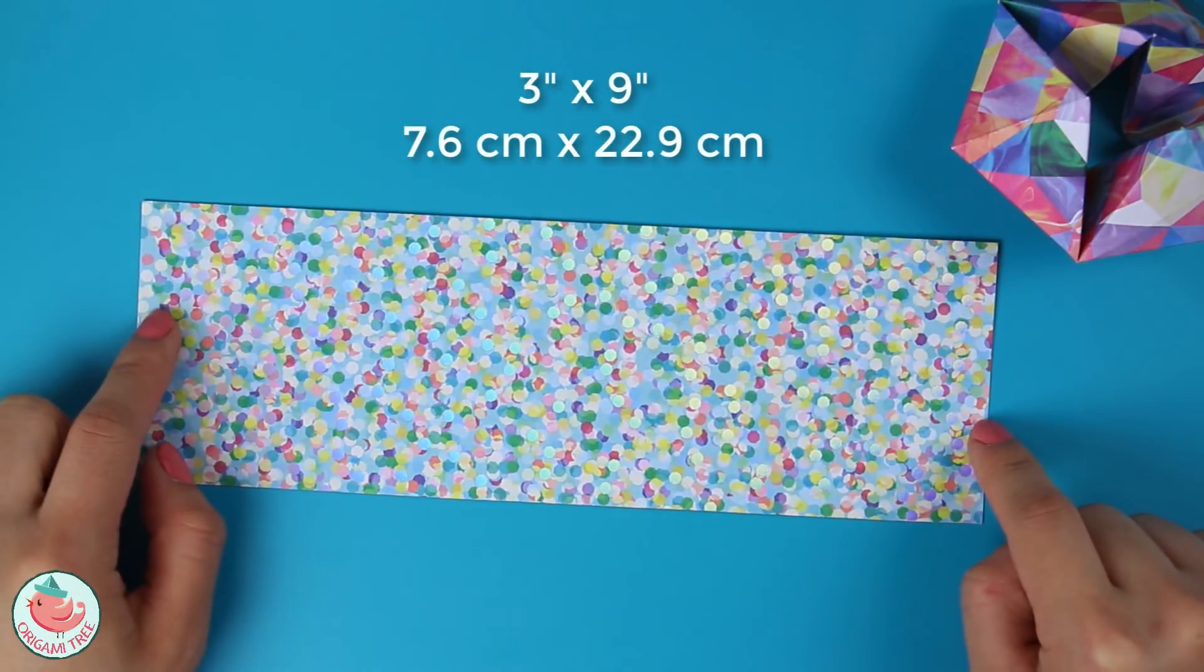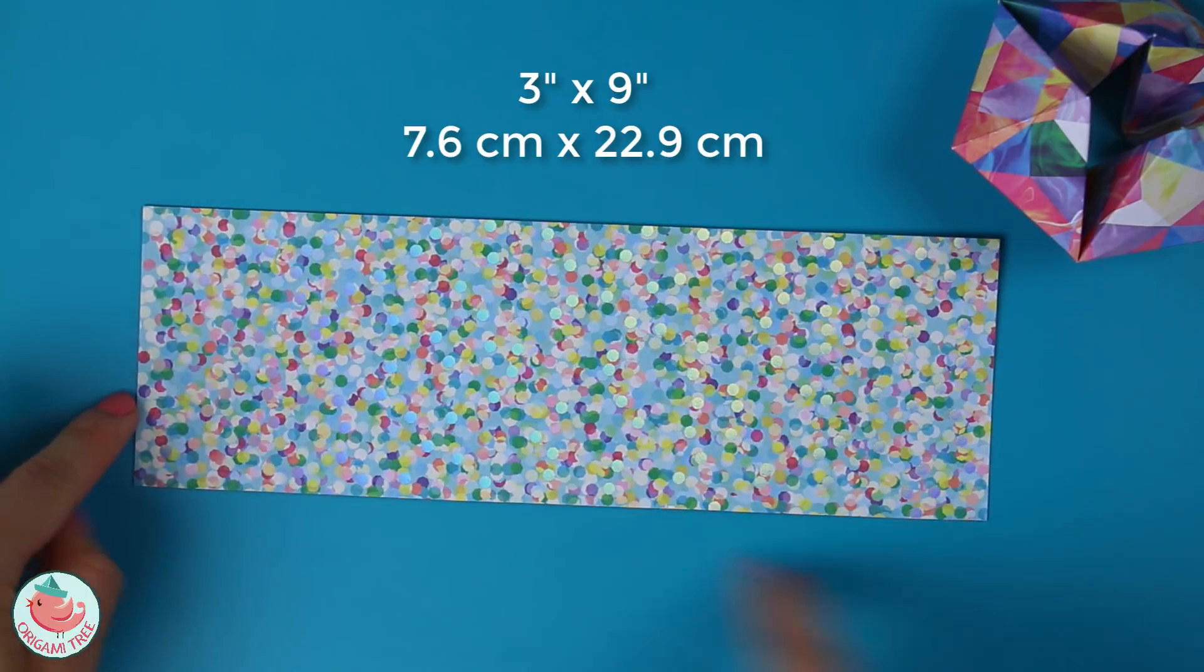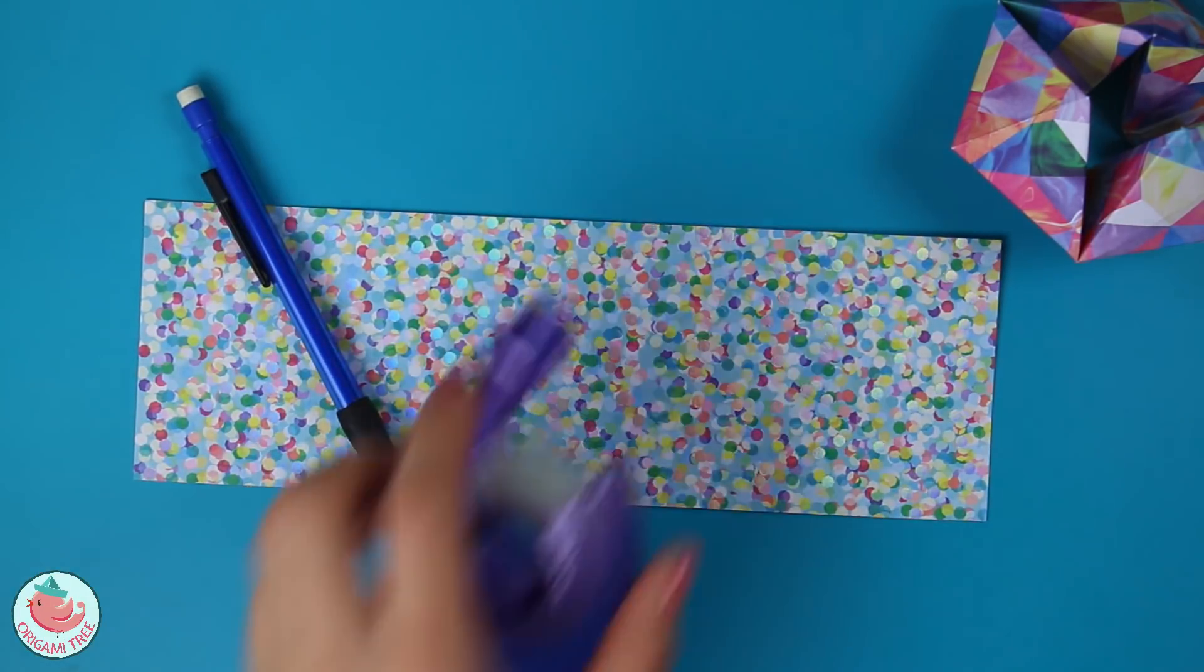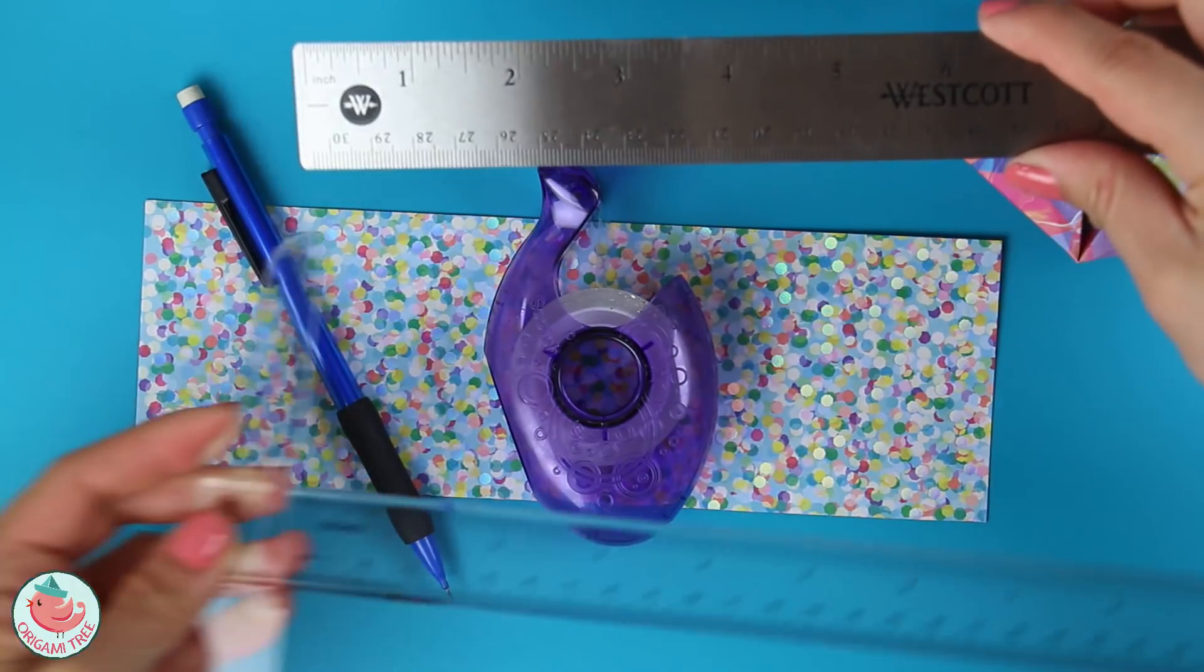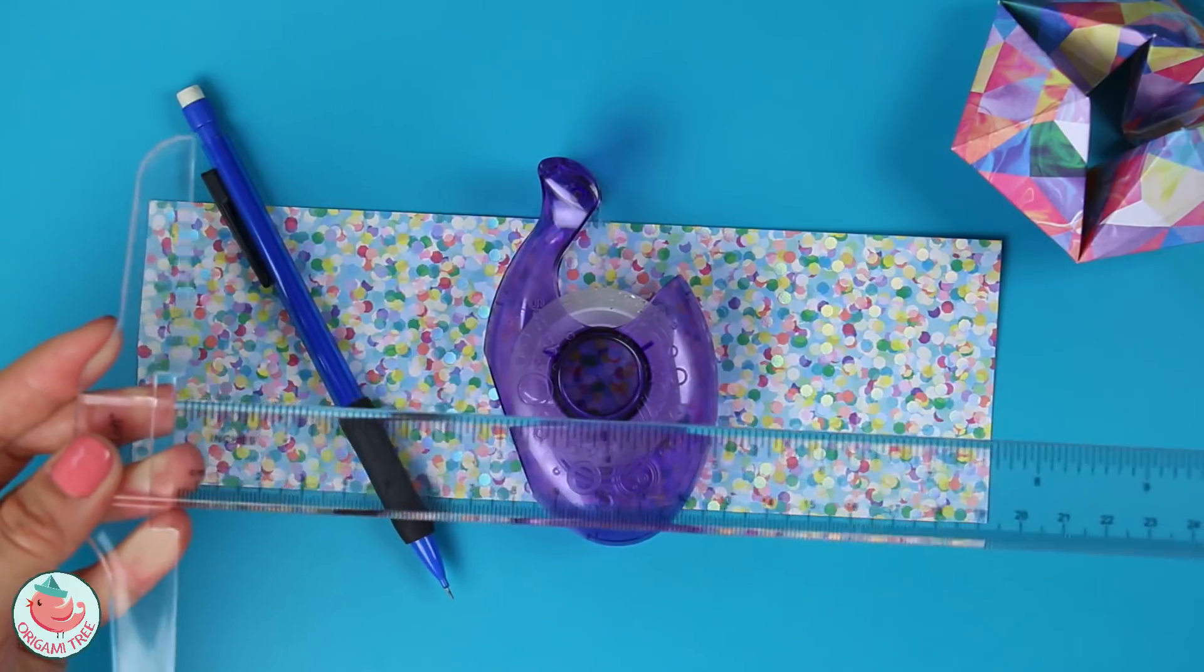To make the flexagon you're going to need a long strip of paper that is a 1 to 3 ratio. So this is 3 inches by 9 inches. You'll also need a pencil and an eraser, some clear tape, a ruler or a t-square to help you make right angles. I personally like the t-square better. And this is optional but I like to use a bone folder as well when I work with heavy cardstock.